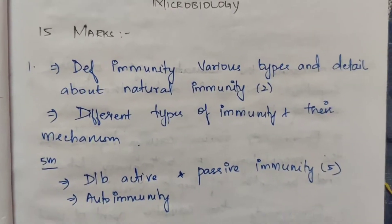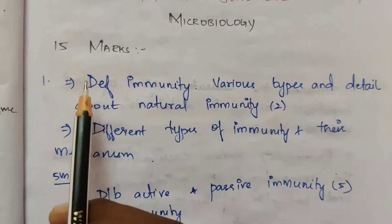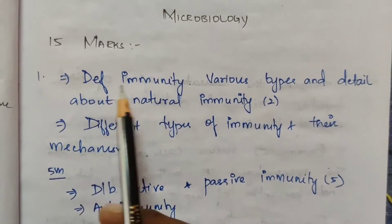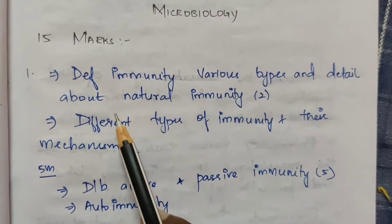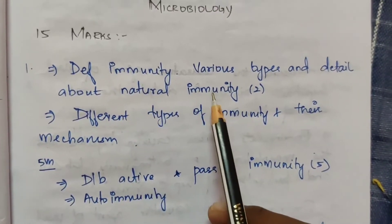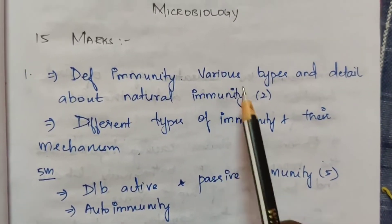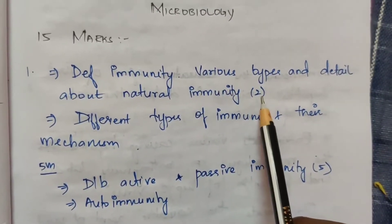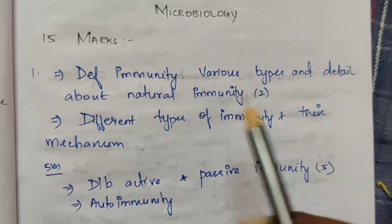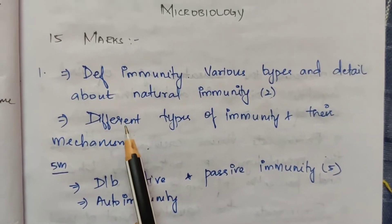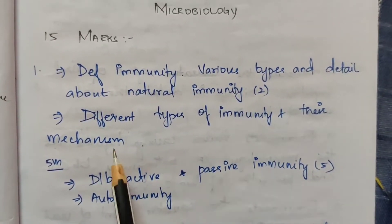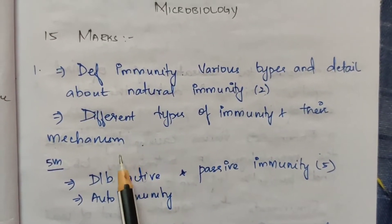The first topic is immunity related. Define immunity, its various types, and details about natural immunity. In the 15-mark questions, this has appeared 2 times. One question is: describe the different types of immunity and their mechanisms.